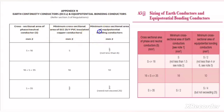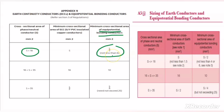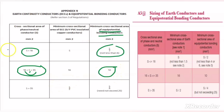Now let us discuss how to select the equipotential bonding conductor depending on the phase and neutral conductor. DIVA states that if the phase conductor size is less than 16 mm², then the equipotential bonding conductor size will be S divided by 2, but not less than 6 mm². DIVA also states that if the phase conductor size is between 16 and 35 mm², then the equipotential bonding conductor size will be 10 mm². And when the phase conductor size is greater than 35 mm², the equipotential bonding conductor size will be S divided by 4, but not exceeding 25 mm².